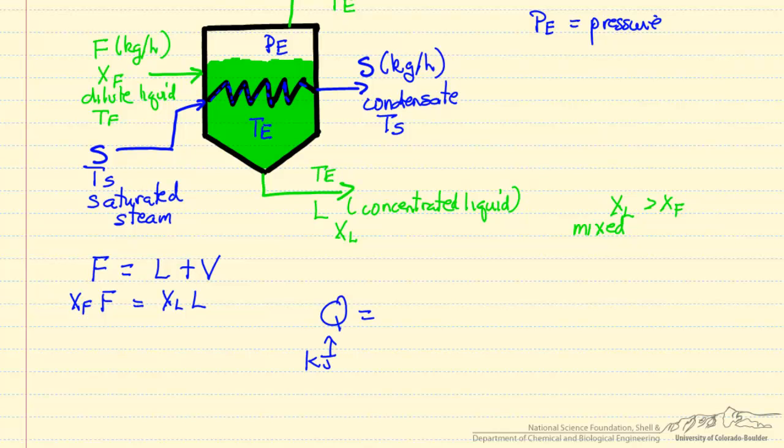This is kilojoules per hour equal to an overall heat transfer coefficient. So this heat transfer coefficient is taking into account all of the heat transfer of both sides of the heat transfer tubing.